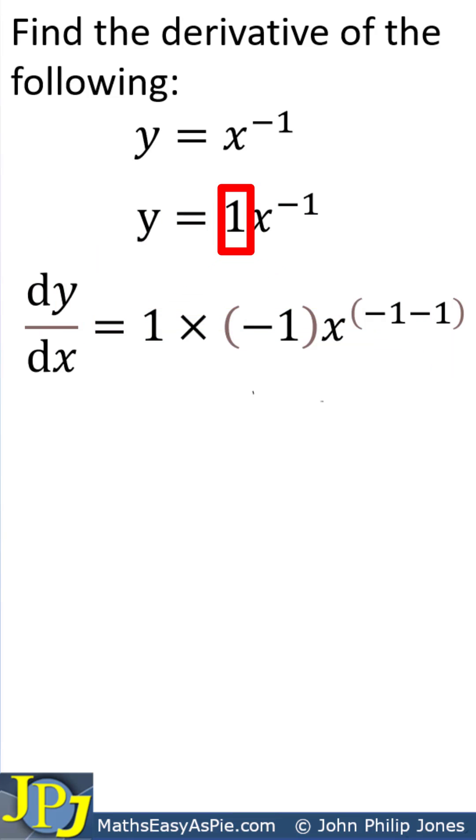Now, this 1 is multiplied by this minus 1, as you can see here. We then write this x down to here, and from this, we subtract 1 as illustrated here.